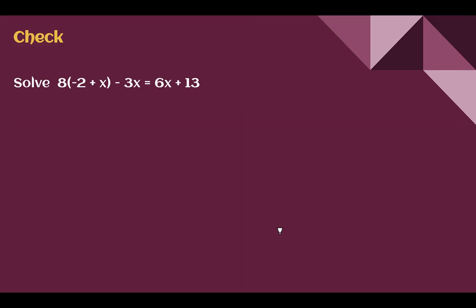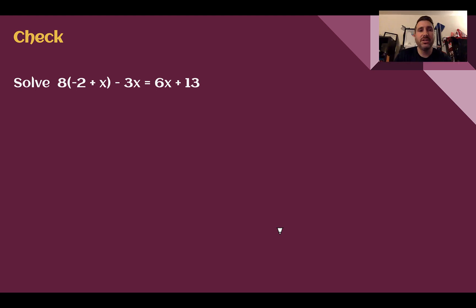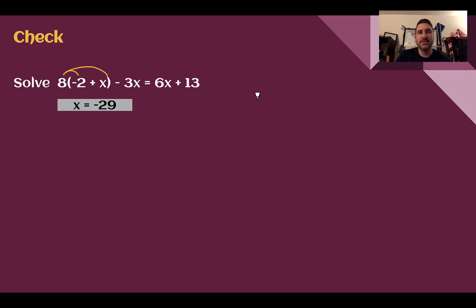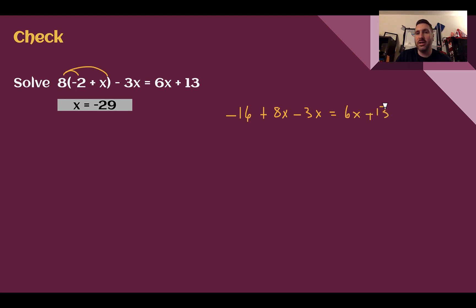Check your understanding — solve the given equation for the variable. Pause the video now and complete the check. You should have found x to be equal to negative 29. First, I'm going to distribute 8 to the negative 2 and to the x. So I have negative 16, and with the 8 and the x I end up with plus 8x. I still have that minus 3x at the end. On the right side, I didn't have any parentheses, so it's already expanded out.